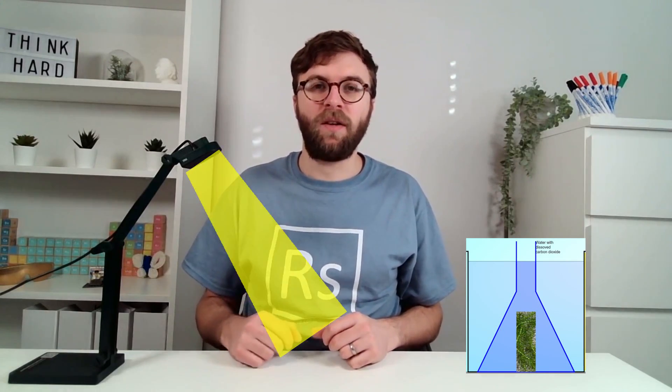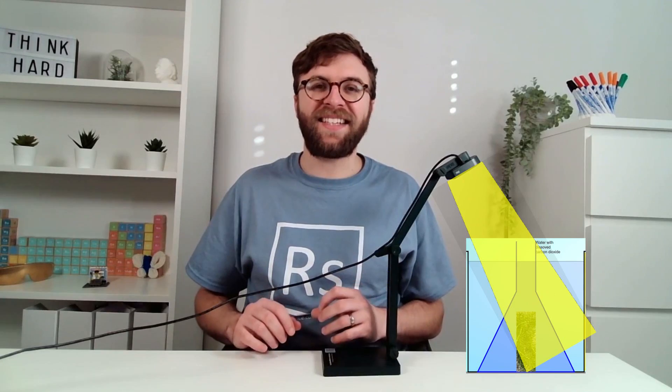So if we have a lamp that we can't change the intensity, like this one, we could do so by changing the distance. At different distances, the light intensity would change. The light intensity would increase as the distance decreased.